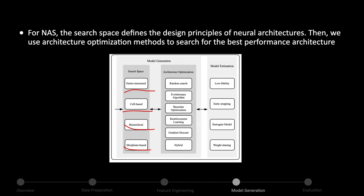After defining the search space, we use an architecture optimization method to search for the best-performing architecture. There are many different architecture optimization methods: random search, grid search, evolutionary algorithm, Bayesian optimization, reinforcement learning, gradient descent-based methods, surrogate model-based optimization (SMBO), and hybrid methods.